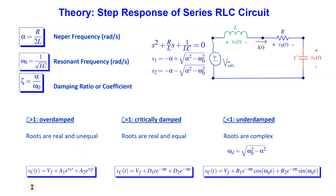The expression for the voltage across the capacitor has this general form, where A1 and A2 are some constants. S1 and S2 are the roots, and Vf is the final voltage across the capacitor, which is equal to the input voltage.